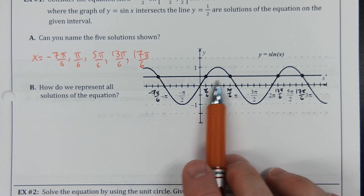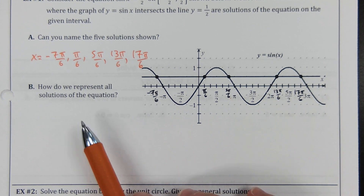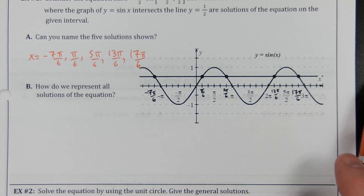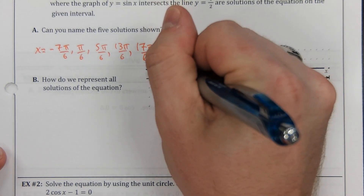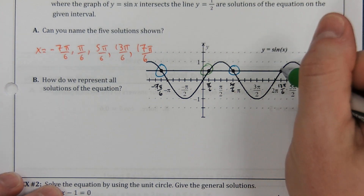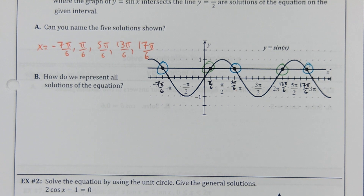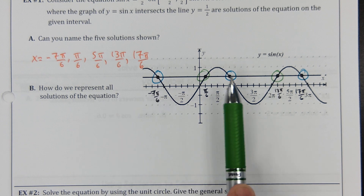Notice that these two solutions are closer to each other than these two. I can't write one generic rule to describe all of them easily, so what we do is write two generic rules — x sub one and x sub two. The key thing to realize is that some solutions are on the decreasing side of the wave, and others are on the increasing side. Since sine of x is a periodic function, each group repeats exactly once every period.